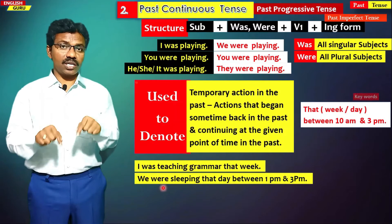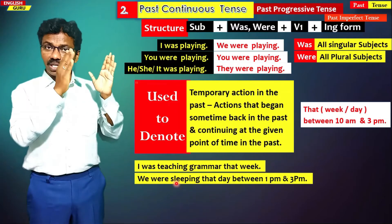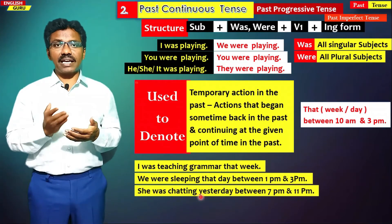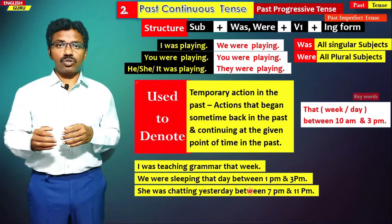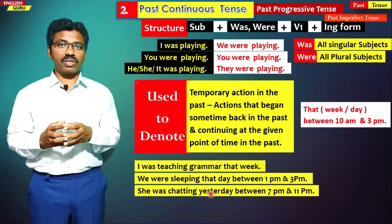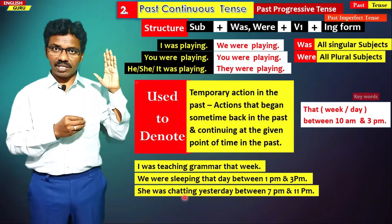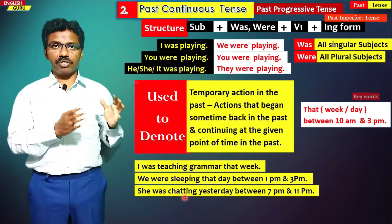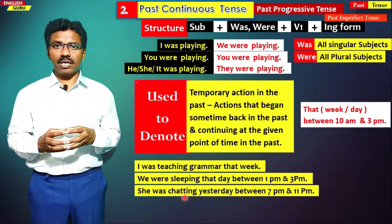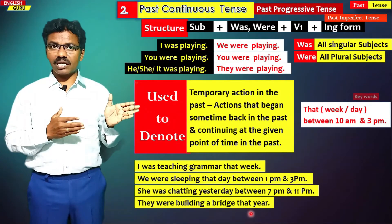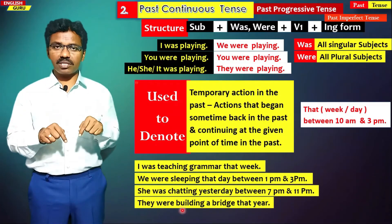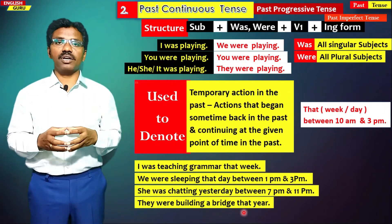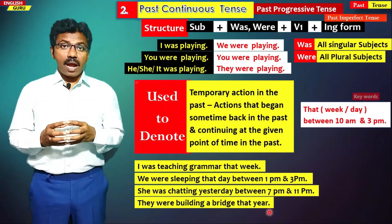On that day, at that particular time, that activity continued up to a certain extent and ended. Similarly, she was chatting yesterday between 7 p.m. and 11 p.m. — from 7 to 11 she was chatting, the activity started at 7 and ended at 11. They were building a bridge that year — the entire year they were building, they started, continued, and completed it. For such situations we use past continuous tense.